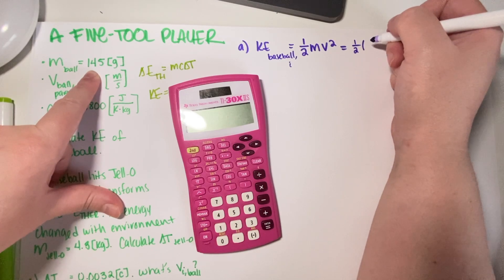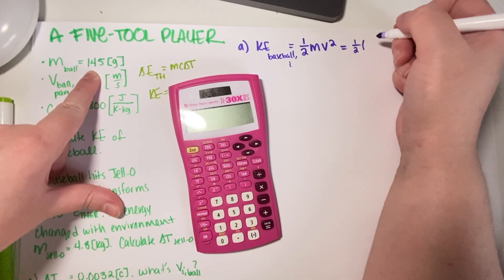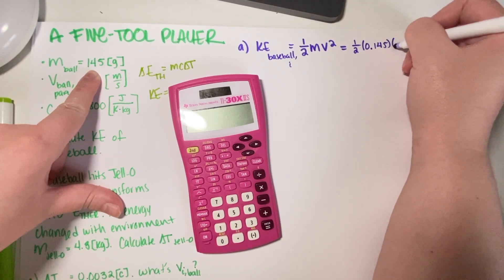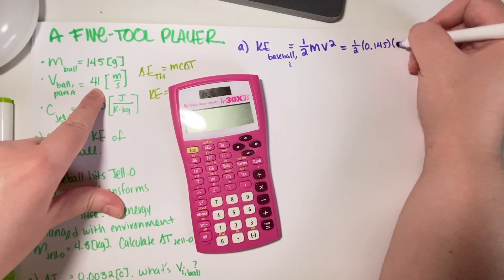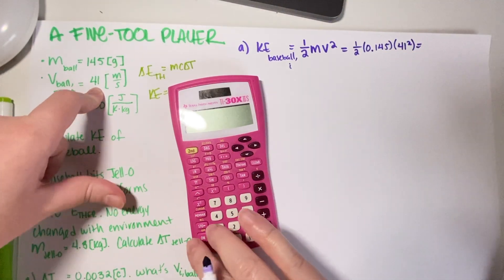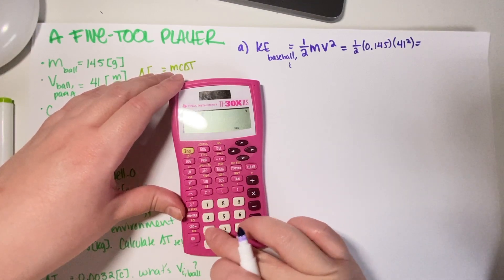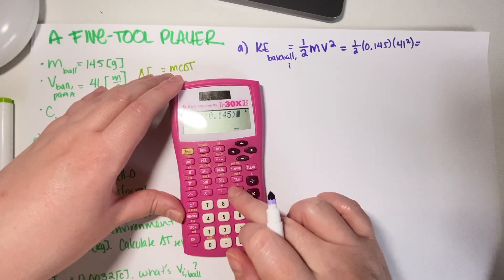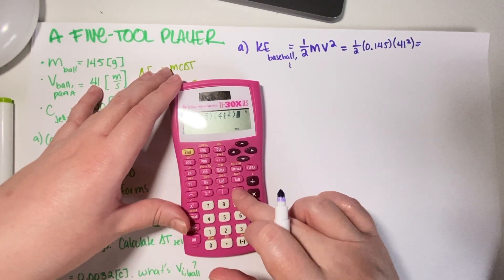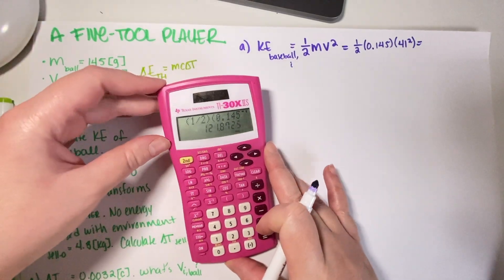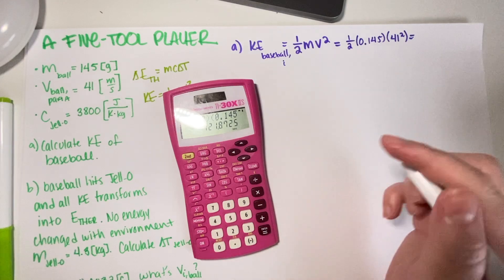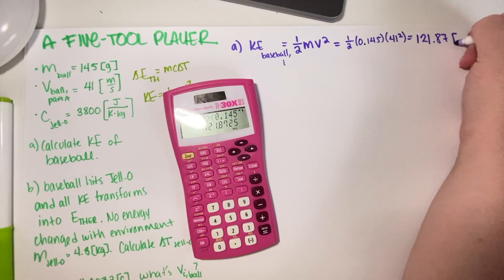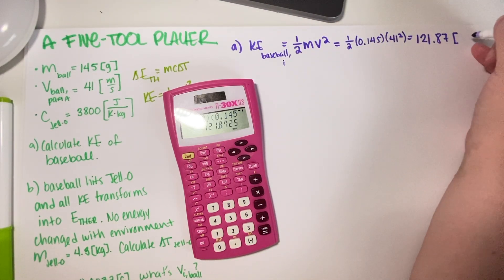The mass is, we have to do this in kilograms, so 0.145, and then your velocity is already meters per second, so 41 squared. This gives us 121.87 joules of energy because I changed this to kilograms.